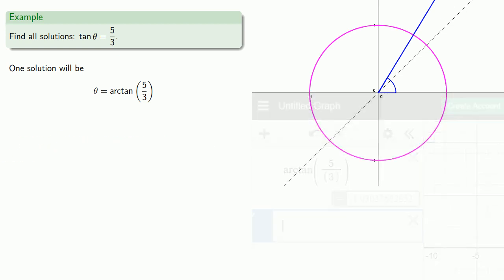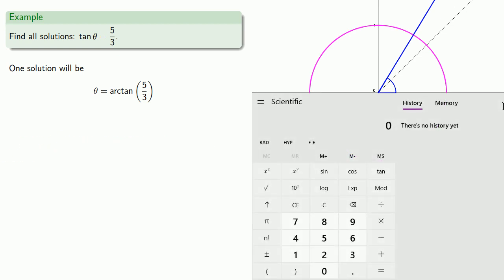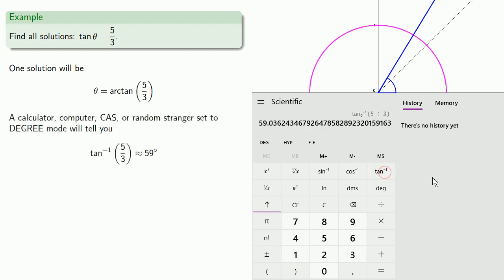And so we need to make sure that our calculator, computer, CAS, or random stranger is set to degree mode. And if we do that, they'll tell us that the inverse tangent of 5 thirds is about 59 degrees.